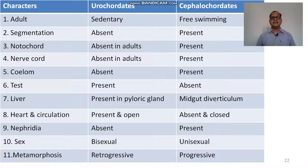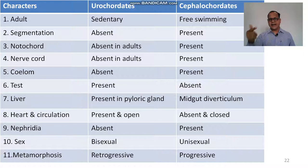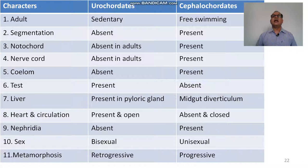Differences: adults are sedentary in Urochordata, free-swimming in Cephalochordata. Segmentation absent in Urochordata, present in Cephalochordata. Notochord absent in adult urochordates but present in larva; present in adult cephalochordates. Nerve cord absent in adult urochordates, present in larva; present in adult cephalochordates. Coelome absent in Urochordata, present in Cephalochordata. Tail present in Urochordata; liver present as pyloric gland in Urochordata and as midgut diverticulum in Cephalochordata. Heart present with open circulation in Urochordata, absent with closed circulation in Cephalochordata. Sexes bisexual in Urochordata and unisexual in Cephalochordata.